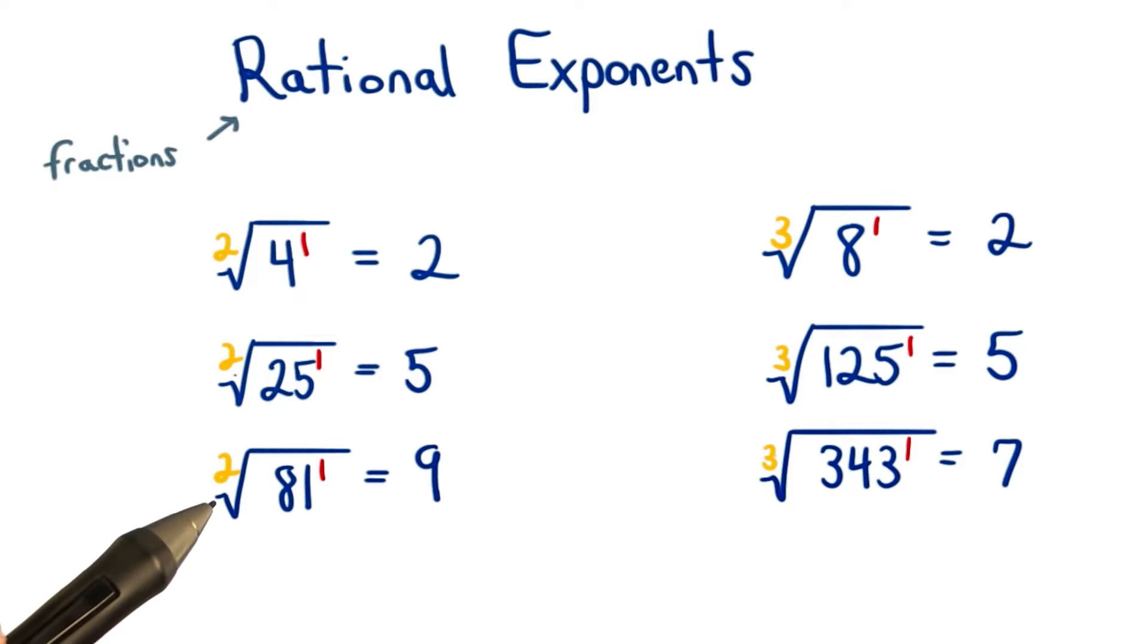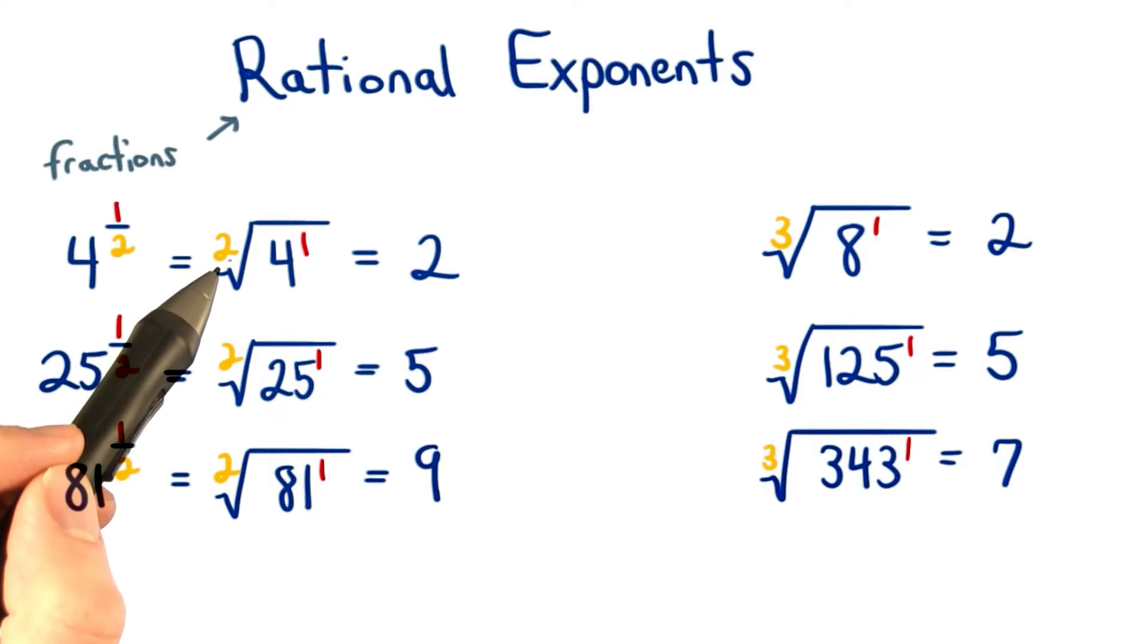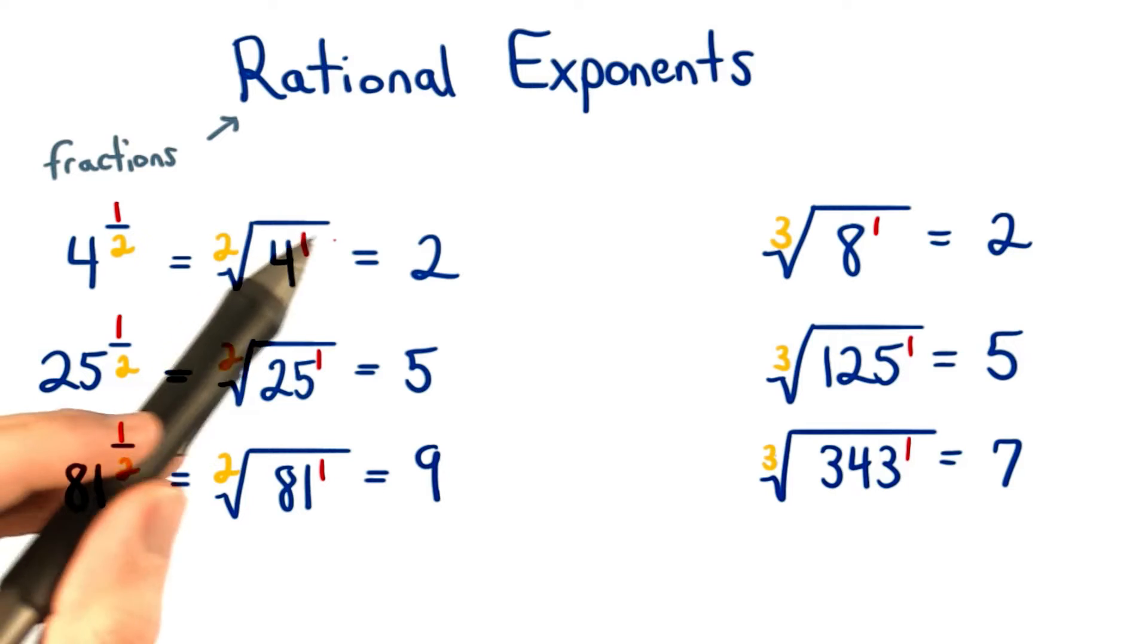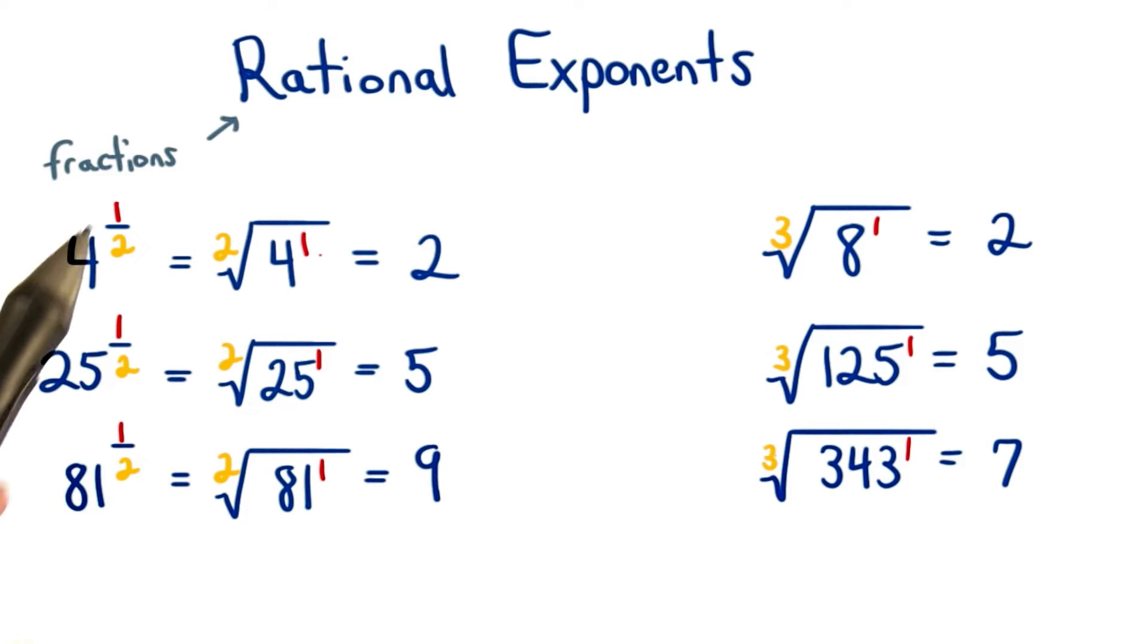Remember that the index here for these square roots is a 2. So using this index of 2 and this power of 1, we can rewrite the square root of 4 as 4 to the 1 half.